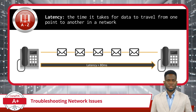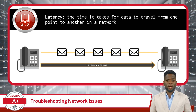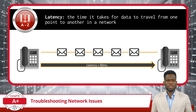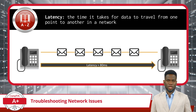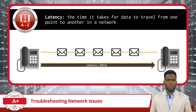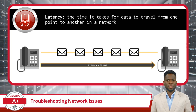External influences like EMI also increase latency. Just about anything that would slow down network speeds would increase latency, as these two properties are inverses of each other. Therefore, addressing latency issues often involves optimizing network configurations or upgrading hardware, as these actions increase overall network speeds.